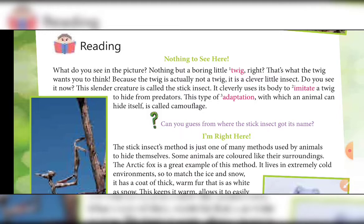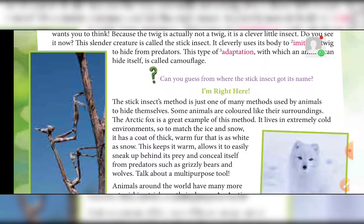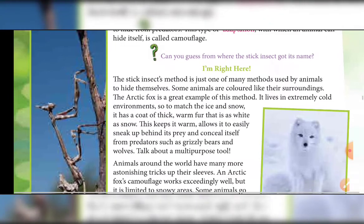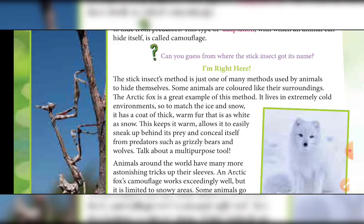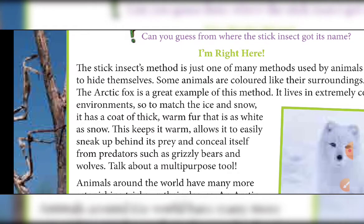Can you guess from where the stick insect got its name? The stick insect method is just one of many methods used by animals to hide themselves. Some animals are colored like their surroundings. The second animal discussed here is the arctic fox. It is a great example of this method — the color of its skin is white and it lives in the polar region where there is ice throughout the year.